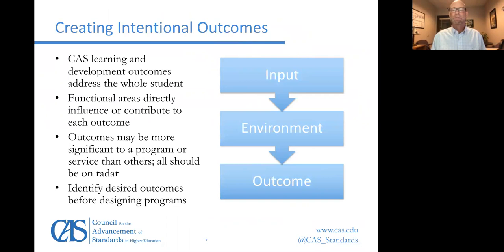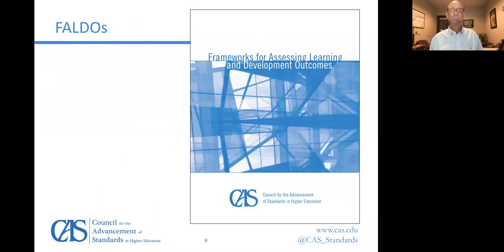Creating intentional outcomes is really the goal of programs and services — we don't want this to happen haphazardly. We think of Astin's IEO model, where the program or service is the environment that has an impact on the inputs students bring toward some desired outcome. Functional areas are those environments that have an impact, so we really need to think through how programs and services intentionally foster student learning and development outcomes, and design those programs around that, assessing the extent to which the desired learning is happening.